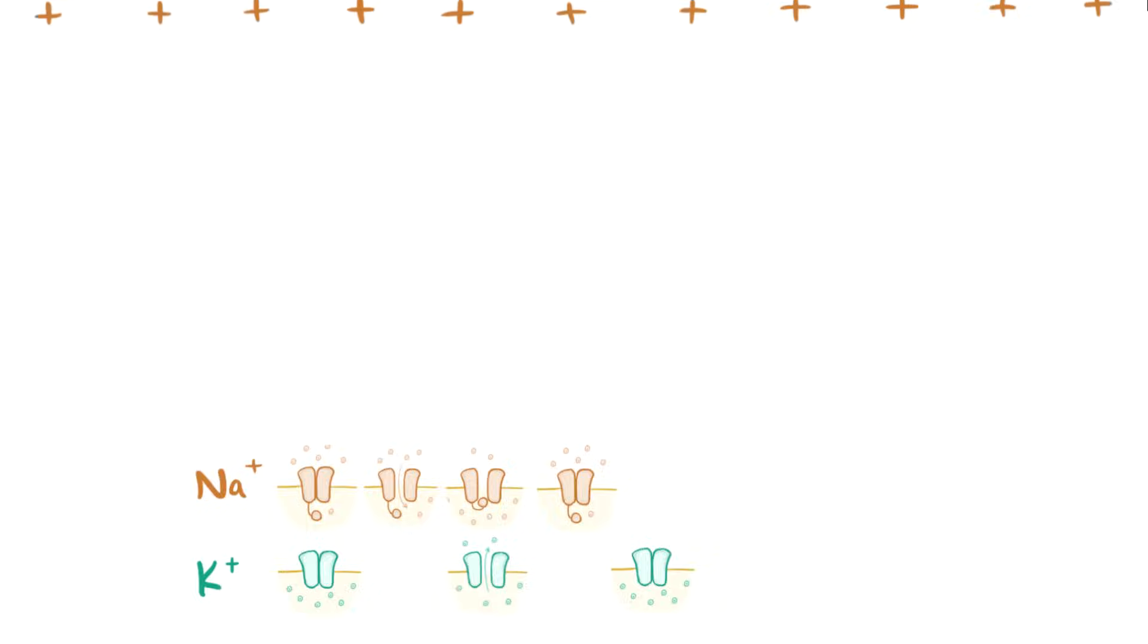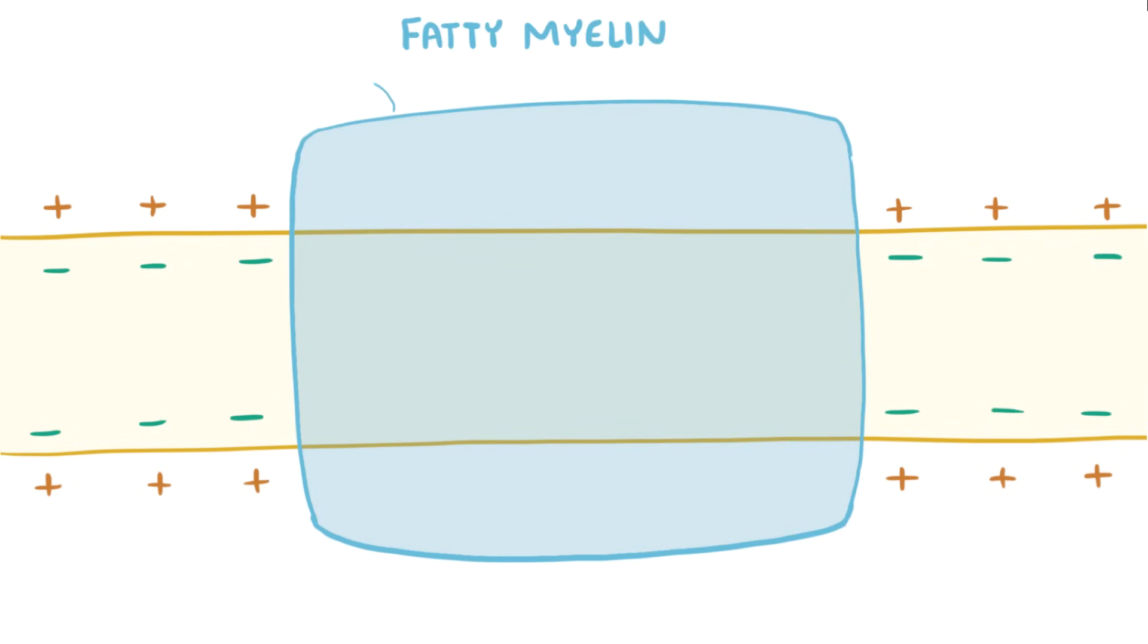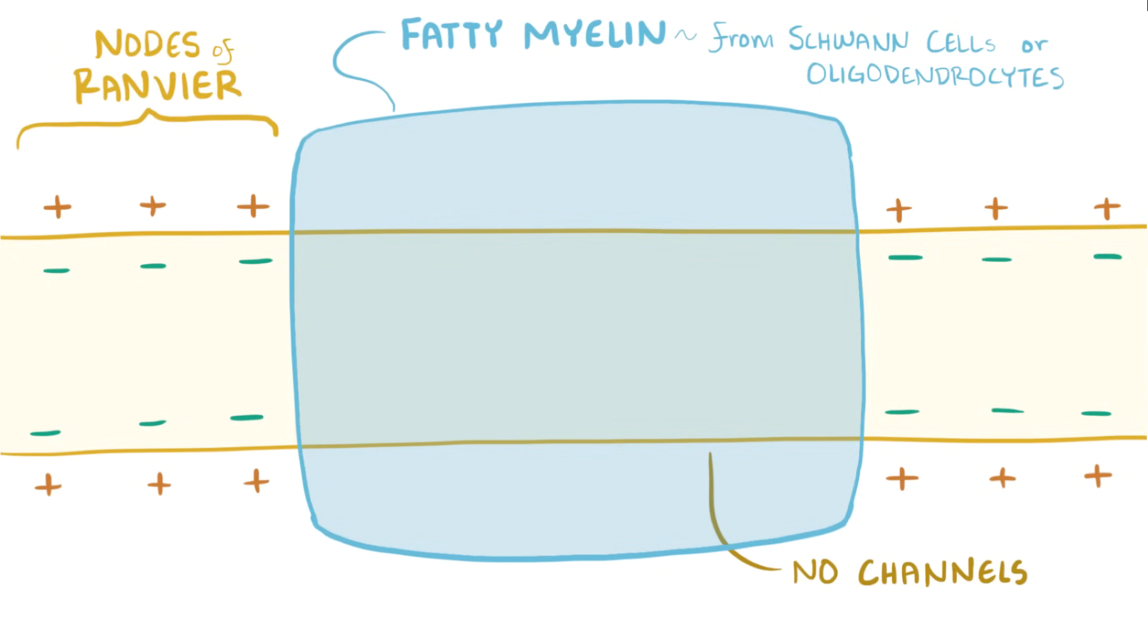Alright, so this process of positive sodium ions moving in and depolarizing the cell transmits the electrical signal down the length of the axon, great. But really this process isn't that fast, so that's where the fatty myelin comes in, which comes from glial cells like Schwann cells or oligodendrocytes. These myelinated areas don't have voltage-gated ion channels spanning the membrane, so ions can't simply flow into the cell. That only happens in the spots between the myelin, called nodes of Ranvier.